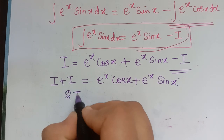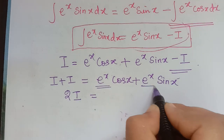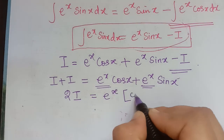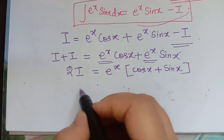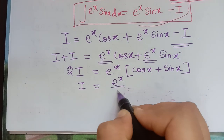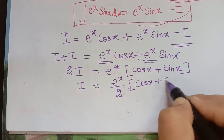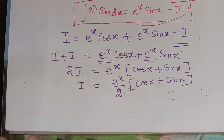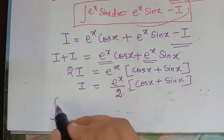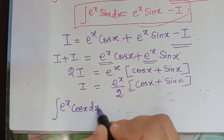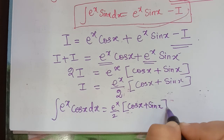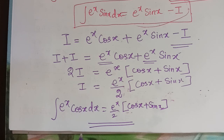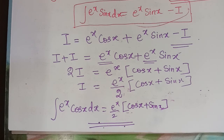So I plus I is 2I, equal to e^x cos x plus e^x sin x. We can see that e^x is common in both terms, so taking it out: 2I equals e^x times (cos x plus sin x). Therefore I equals e^x divided by 2, multiplied by (cos x plus sin x). This is the answer to the integral of e^x cos x dx. Problem numbers 19 and 20 are very significant questions and may appear under 7 marks. Thank you.